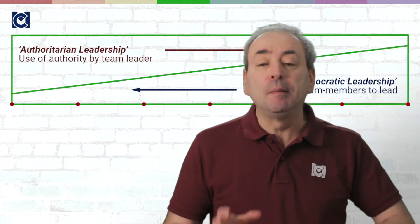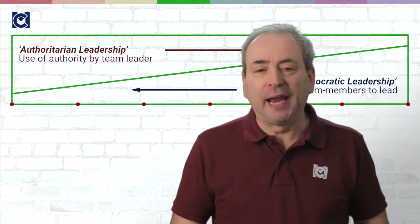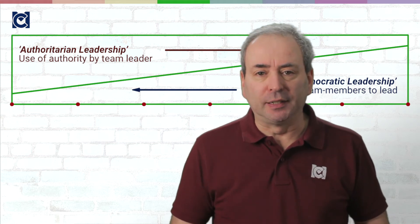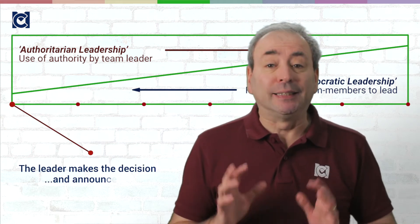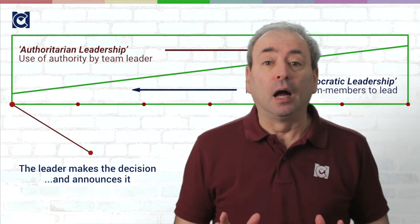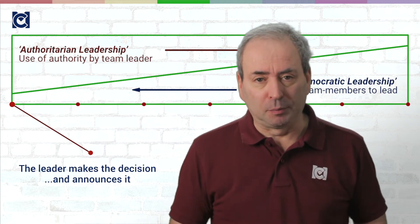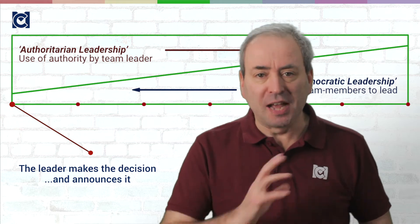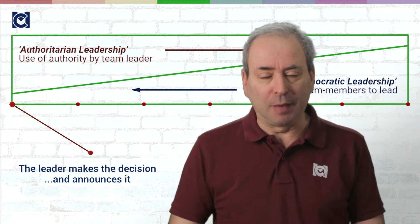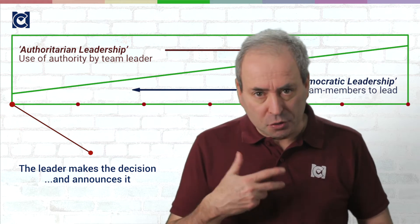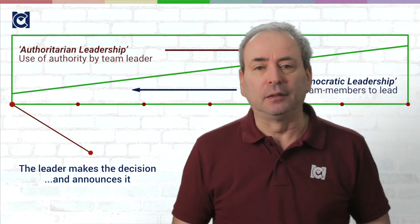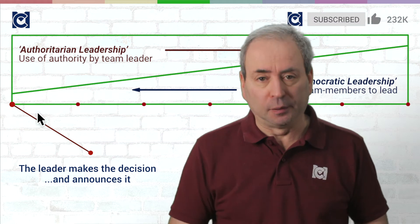The first is the most authoritarian style of leadership. The leader makes a decision about how to solve the problem, announces it to the team, and requires them to enact their solution.